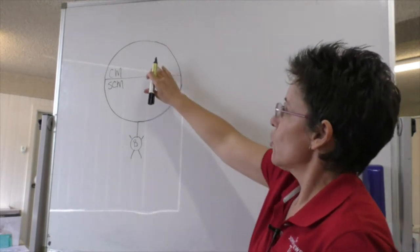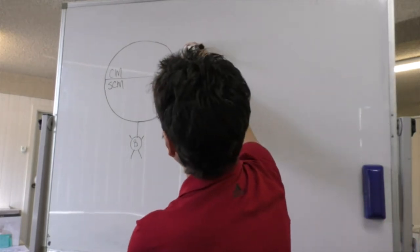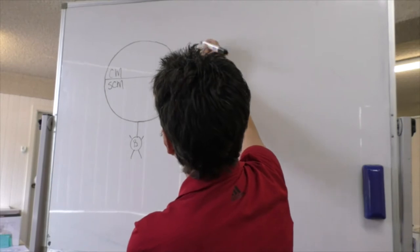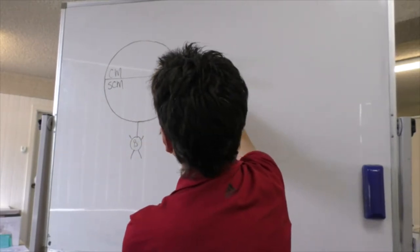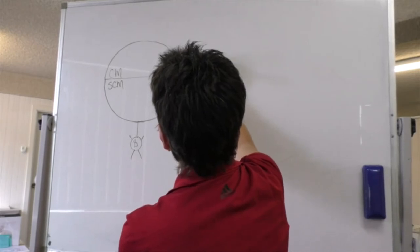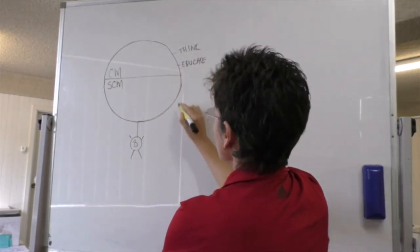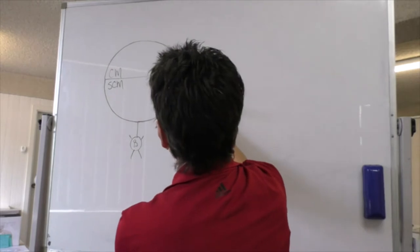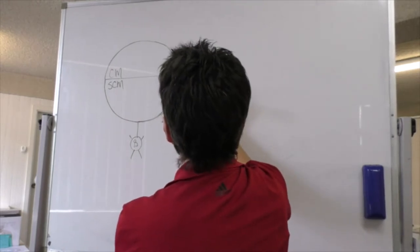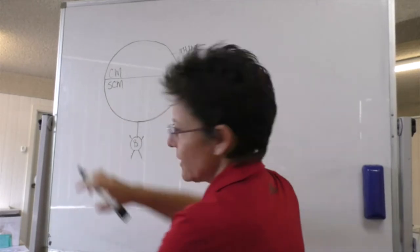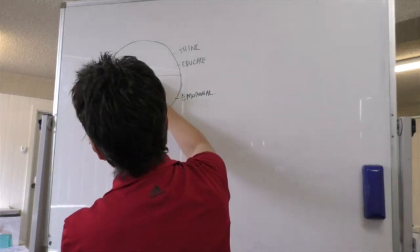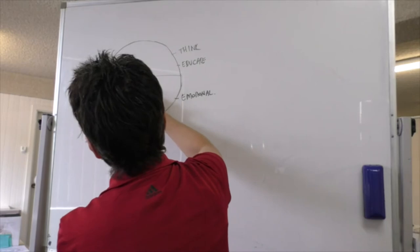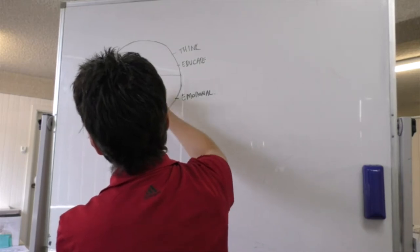Well, it's the conscious mind which is what we use to think, to analyze, to reason. It's also when we are studying and we educate ourselves that we use the conscious mind. The subconscious mind is also called the emotional mind. It's in the subconscious mind that all our beliefs reside and all our habits.